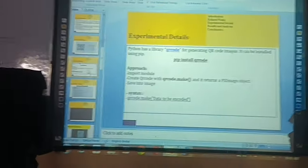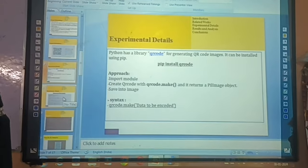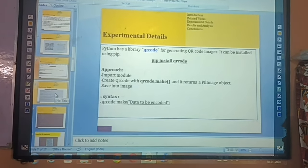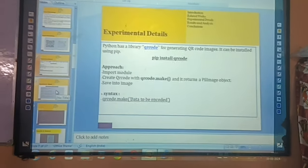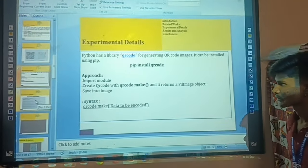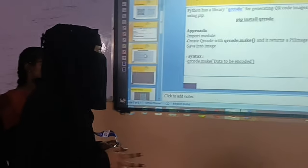Now I am going to explain the experimental details. In any website, we can install the QR code library for generating QR code images by using PIP, which stands for Python Installation Package. We import the module, create QR code with the qrcode.make function, which returns an image object. After that, we save the image.